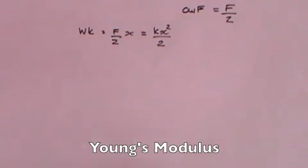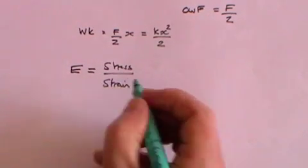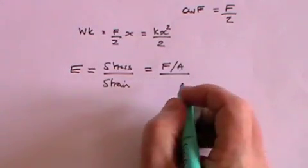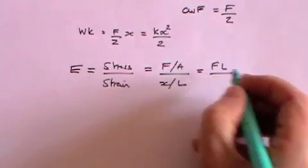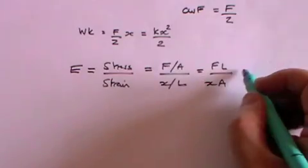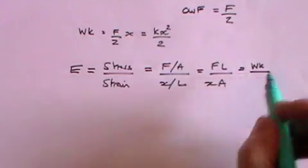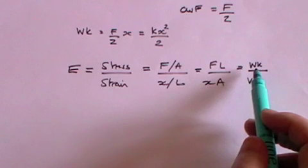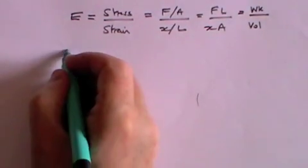We now come to Young's modulus. Young's modulus, usually represented by capital E, is equal to stress divided by strain. Stress is force over area; strain is extension divided by original length. Working that out gives: E equals force times length divided by extension times area. You might note that force times length is a measure of work done, and extension times cross-sectional area is volume — so Young's modulus is effectively measuring the work done or energy stored per unit volume of the material being stretched.